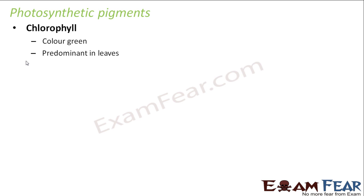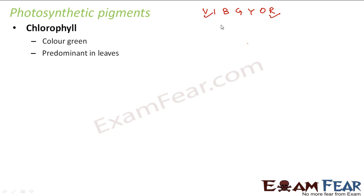Chlorophyll has the property of absorbing light energy strongly in the red and violet regions of the spectrum. The spectrum has colors: violet, indigo, blue, green, yellow, orange, and red. Since chlorophyll absorbs red and violet strongly, the color it does not absorb is green — the middle one. So green is reflected and transmitted, and that is why we see leaves as green. Similarly, a red object absorbs all other colors except red, which is transmitted — so we see it as red.